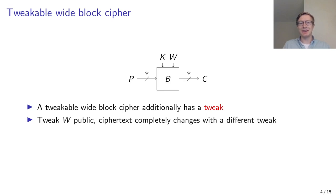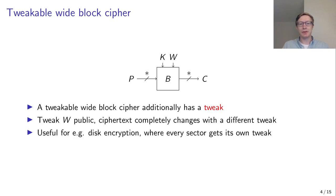What we can also add is a tweak. So then we get a tweakable wide block cipher, which is a normal wide block cipher that also takes a tweak as an additional input. The tweak behaves a bit like the secret key in that the ciphertext completely changes when we change the tweak, but in contrast to the secret key, the tweak can be public. This is useful for disk encryption, where we can use the sector number as the tweak, meaning that the same file encrypted multiple times does not produce the same ciphertext.